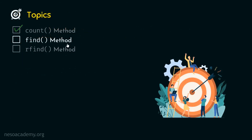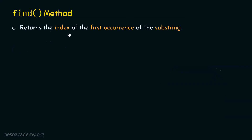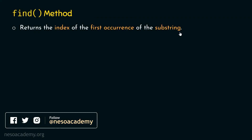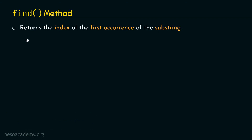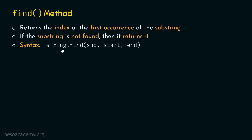Now let's discuss the next topic, which is find method. Find method returns the index of the first occurrence of the substring. Just like count method, we need to provide the substring to the find method. If the substring is not found, then it returns minus one — not zero, but minus one. The syntax is: string.find(sub, start, end), where start and end are optional arguments.